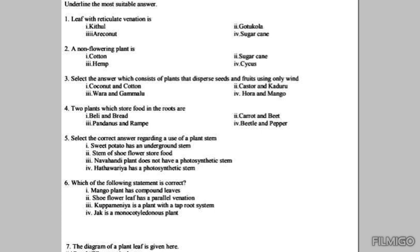Third one, transport water and food throughout the plant body. And the fourth one is some plant stems can carry out vegetative propagation. That means they can produce new plants by the stem, for example shoe flower, jasmine, sweet potato, and manioc.